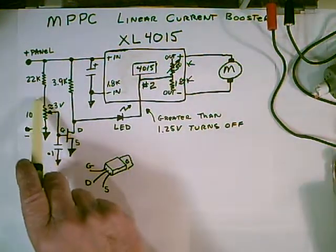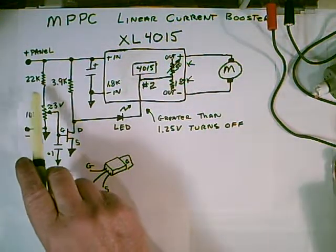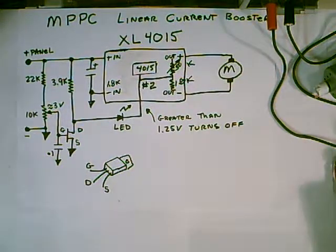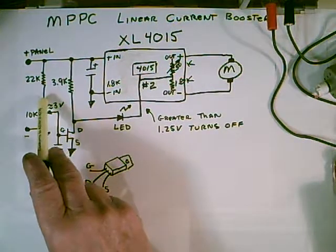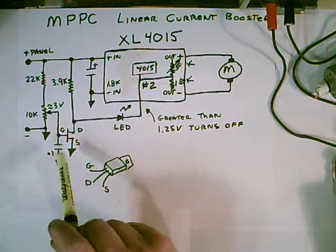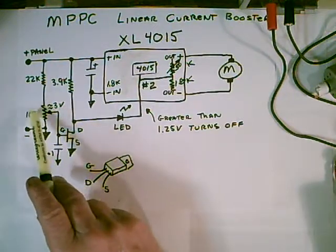So remember, you want to keep your panel at the power point voltage. That's usually listed on the back of the panel. There will be the maximum voltage that it will put out, and then there will be the maximum power point voltage. And you want to set the voltage for somewhere around there.